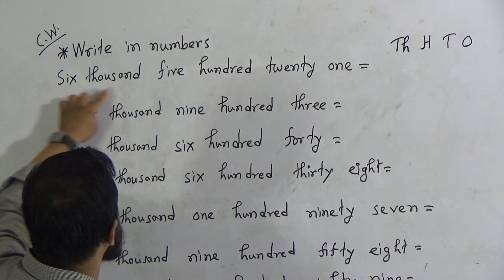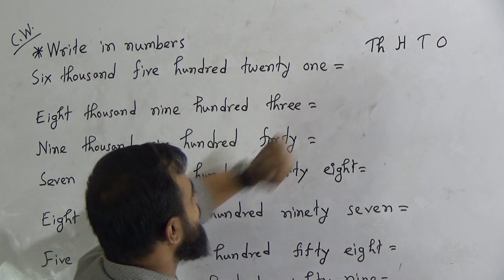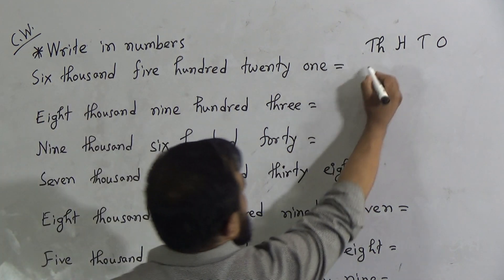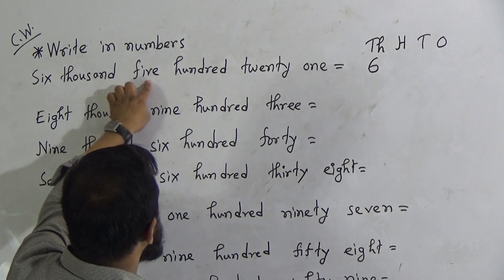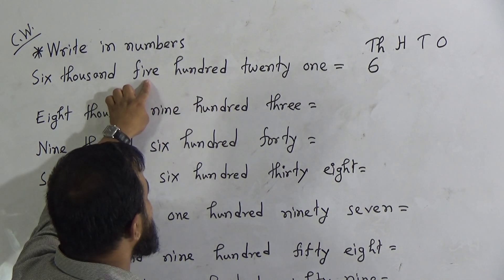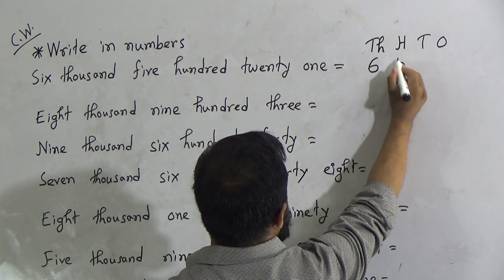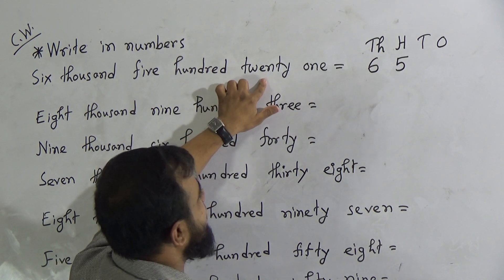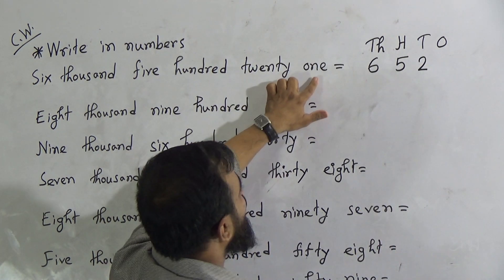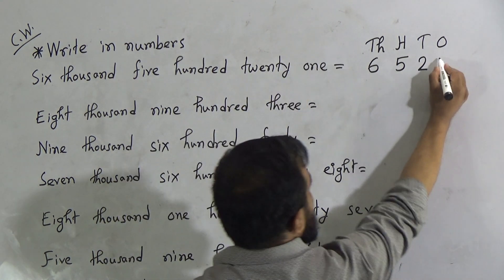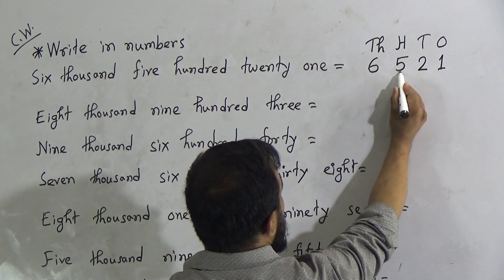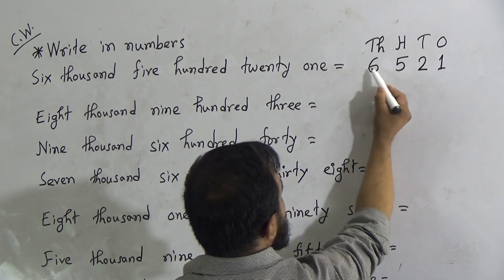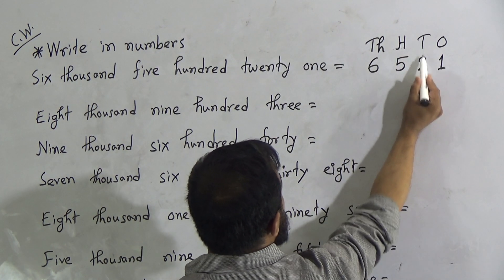The first number is 6521. To write this, 6000 means we write 6 in the thousands place. 500 means we write 5 in the hundreds place. For 21, we write 2 in the tens place (for 20) and 1 in the ones place (for 1). So 6521 is written as 6 | 5 | 2 | 1 in the place value table.